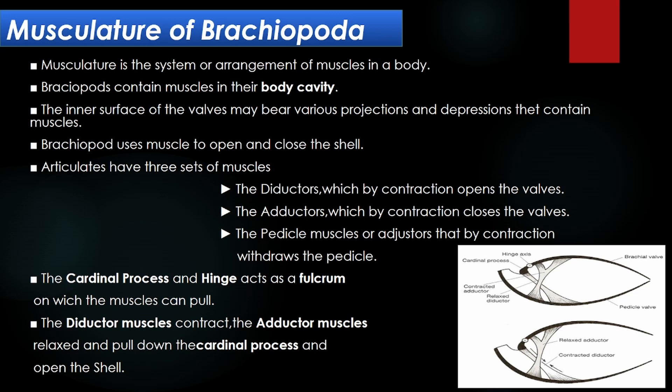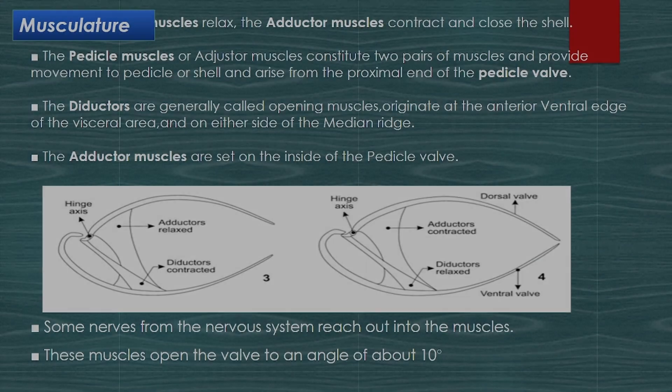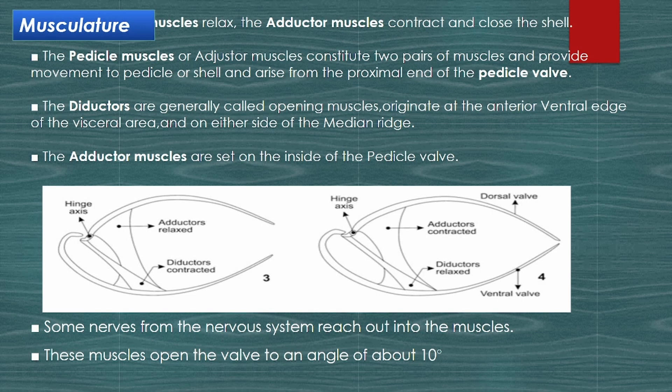Regarding the function of musculature of Brachiopoda: when the diductor muscles relax, the adductor muscles contract and close the shell. The pedicle muscles or adjuster muscles constitute two pairs of muscles, provide movement to the pedicle or shell, and arise from the proximal end of the pedicle valve. The diductors are generally called opening muscles, originating at the anterior ventral edge of the visceral area and on either side of the median ridge. The adductor muscles are set on the inside of the pedicle valve.